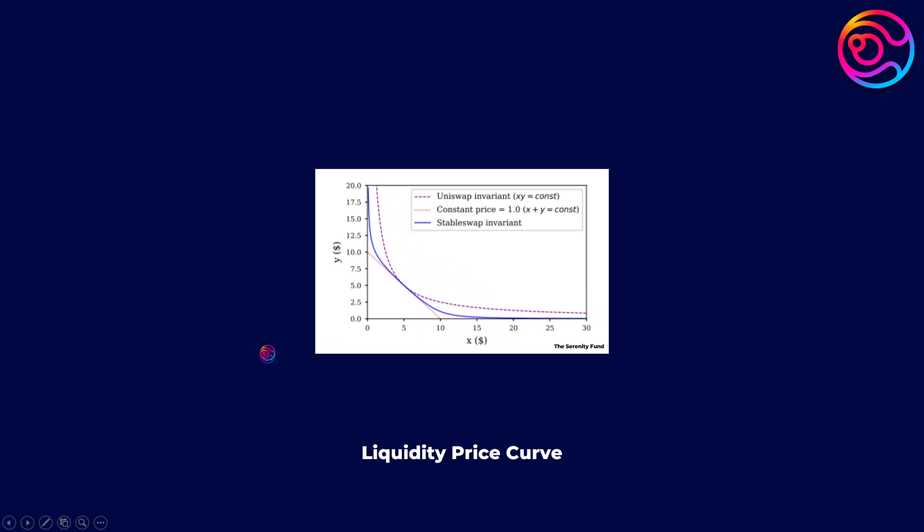Naturally, and as you might expect, that uniformity of liquidity, though easy to manage, is rather inefficient. Why do we need the same liquidity along the entire price curve, including at prices of zero and infinity, when in reality, the majority of trading is most likely to occur somewhere within the middle.